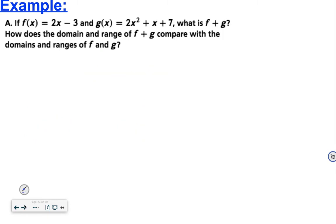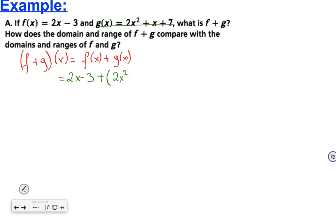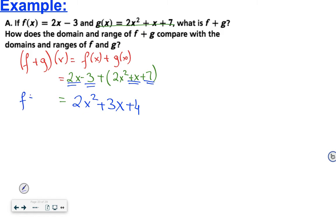If f(x) is 2x minus 3 and g(x) is 2x squared plus x plus 7, what is f plus g? We write (f + g)(x) as f(x) plus g(x), substituting: (2x minus 3) plus (2x squared plus x plus 7). Combining like terms: 2x squared, then 2x plus x gives 3x, and negative 3 plus 7 gives plus 4. So (f + g)(x) equals 2x squared plus 3x plus 4.